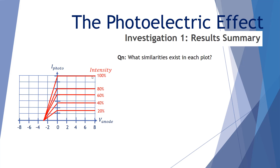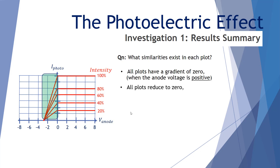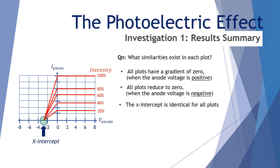Let's look at a summary. Here are all five incident light intensities against the anode voltage. What similarities exist in each plot? First of all, all plots have a gradient of zero when the anode voltage is positive — there might be different photocurrents in each case, but their gradients are the same; they're constant within that positive anode voltage. All plots reduce to zero when the anode voltage is negative — they'll start at different points but end up at a photocurrent of zero. And we noticed that the x-intercept is identical for all the plots — that's three similarities.